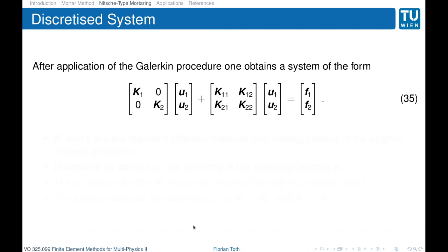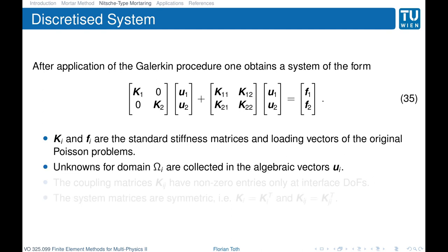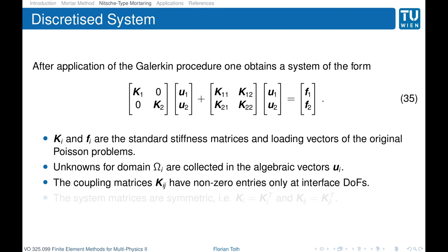How does the discretized system look? Split into the original systems, we have the original stiffness matrices k1 and k2 and their right-hand sides. Then we have coupling matrices that come from the bilinear forms we added, assembled only at the boundary. u1 and u2 collect all degrees of freedom in the two different domains. Importantly, the coupling matrices that achieve coupling via the non-conforming interfaces have non-zero entries only at the interface degrees of freedom, since they are assembled over the interface only and not over the complete volume. The system matrices are symmetric in this case.